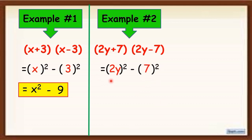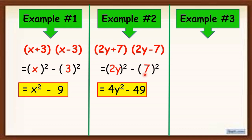Now, let's simplify. 2y squared is equal to 4y². Bakit? 2 times 2 is equal to 4, and y raised to 2 is equal to y². Then, minus 7 times 7 is equal to 49. So, the final answer is 4y² - 49.